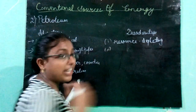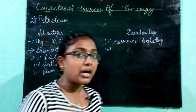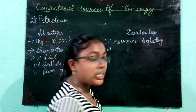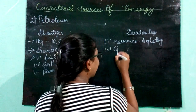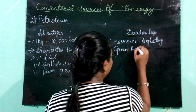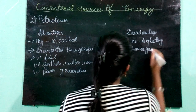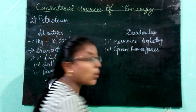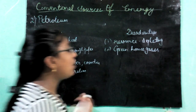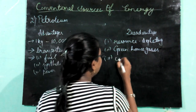We get energy from petroleum by burning it, but by burning it we cause pollution — greenhouse gases are released, which aids global warming.